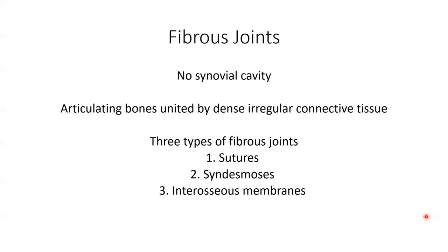Starting with our fibrous joints: a fibrous joint lacks a synovial cavity, and the articulating bones are held really closely together by dense irregular connective tissue. Fibrous joints permit little to no movement, so are also classified functionally as an amphiarthrosis or a synarthrosis.